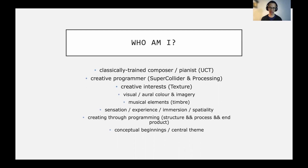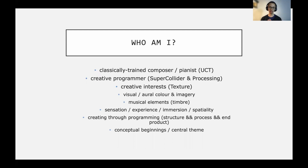My composition process and my creative interests as a whole center around my idea of texture, or my interpretation of it. What makes up texture is a variety of things, including the visual and aural color and imagery of a piece of music, sound art, as well as musical elements like melody, harmony, rhythm, timbre, sensation, tactile sensation, experience, immersion, and spatiality. The whole process, as well as the structure and the end product, are of equal importance. Where you begin, what you're doing in the middle, and what you have at the end all contribute towards the work.